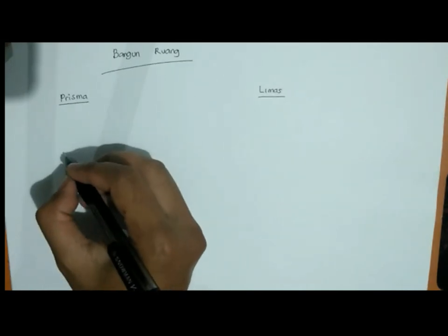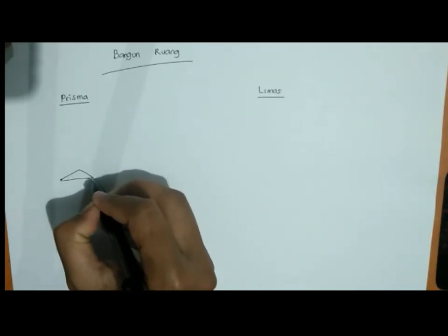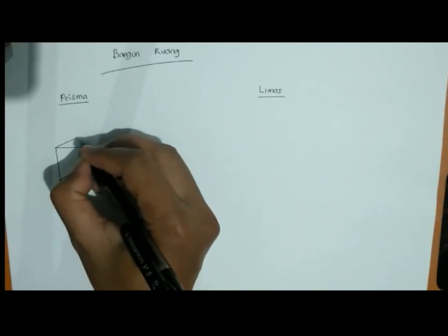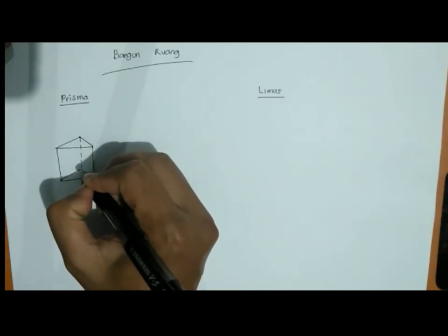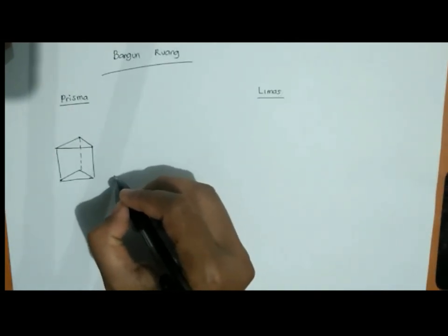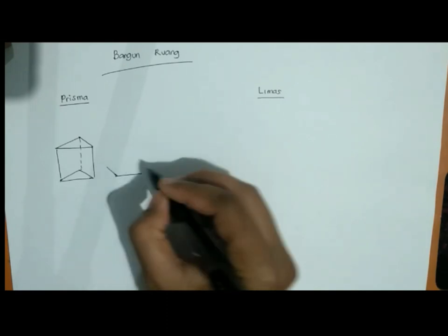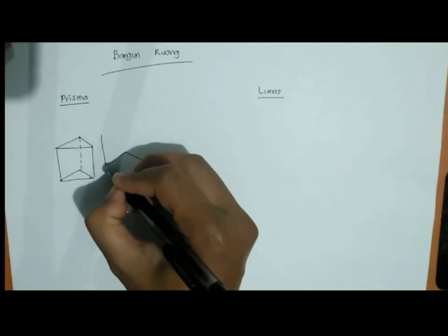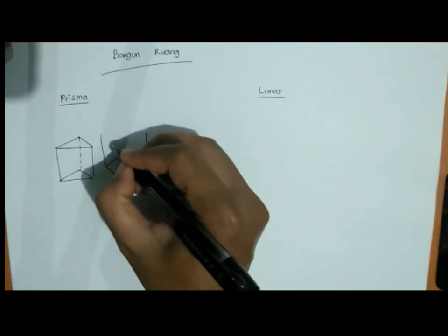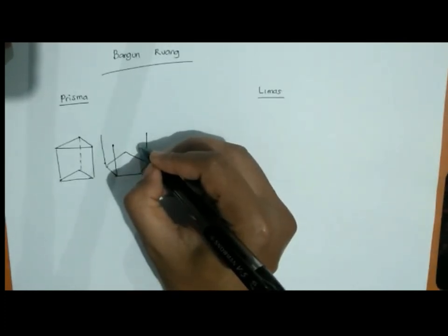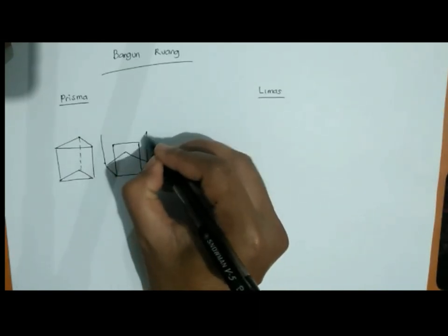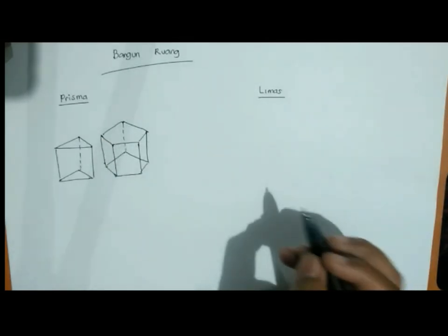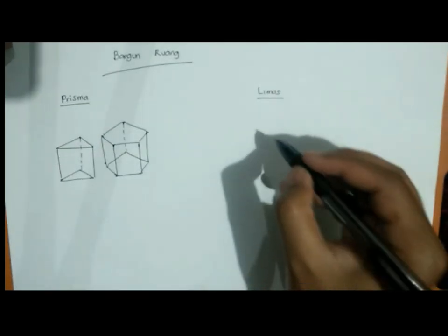Prisma adalah bangun ruang yang mempunyai sisi alas dan sisi atas sama dan sejajar, atau banyak buku menyebutkan kongruen. Kongruen itu artinya sama atau identik, sama ukuran dan sama bentuknya. Perhatikan gambar, ini adalah contoh dari bangun ruang prisma. Pak Imam contohkan dua prisma: yang satu alasnya berbentuk segi tiga, sedangkan satunya alasnya berbentuk segi lima. Untuk menamakan prisma itu sesuai dengan bentuk alas.